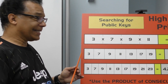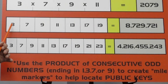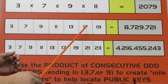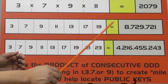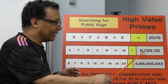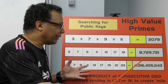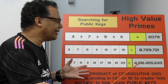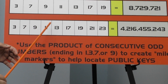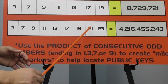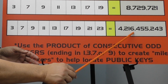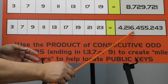We're going to create a 7-digit composite. We start with 3 times 7 times 9 times 11 times 13 times 17 times 19, and we got that number right there — a 7-digit composite. Let's make it even bigger — a 10-digit composite: 3 times 7 times 9 times 11 times 13 times 17 times 19 times 21 times 23, and we have a 10-digit composite.